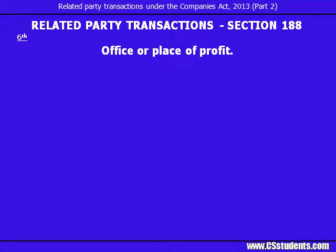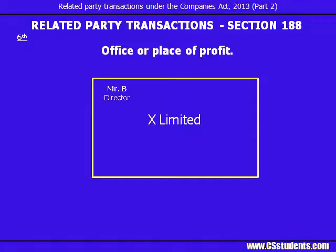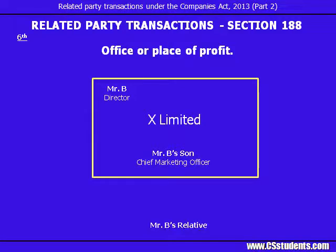Let's look at the concept with an example. Mr B is a director of X Limited. X Limited appoints Mr B's son as Chief Marketing Officer. It's a case of office held by a related party, and covered under Section 188. The second term is 'place of profit', which is different from 'office'. In this case, the related party does not hold any official position but still gets remuneration or some kind of benefits from the company. Like if X Limited appoints one of the relatives of Mr B as consultant and such relative gets fees from the company — it's a case of place of profit.